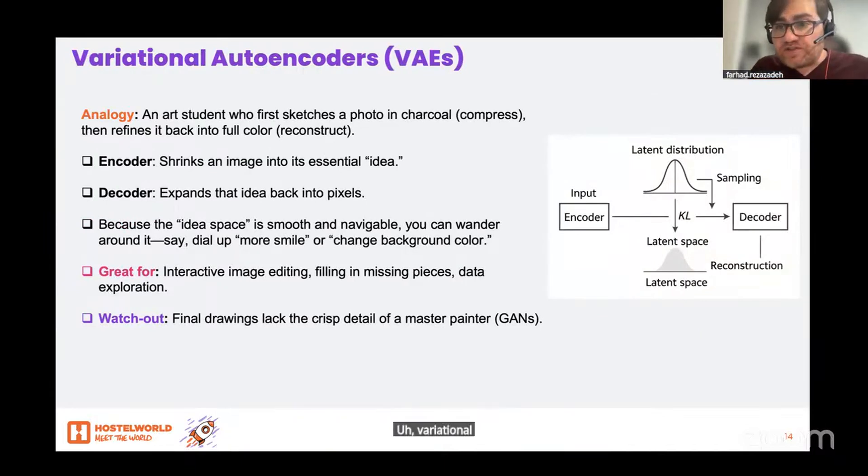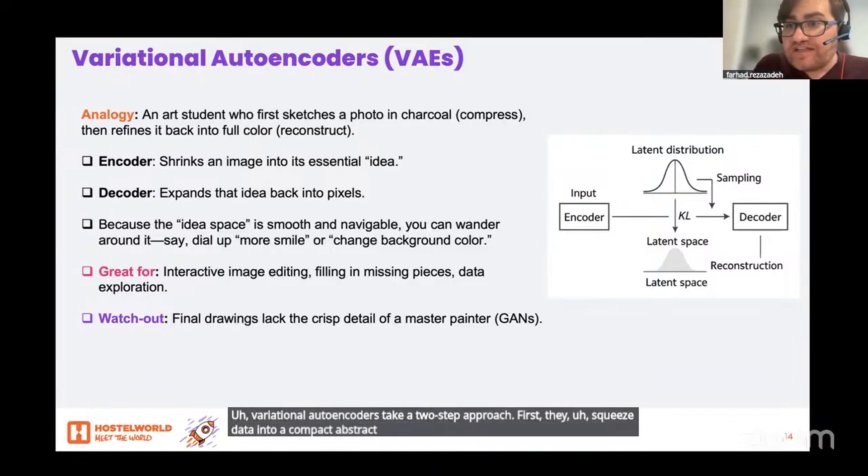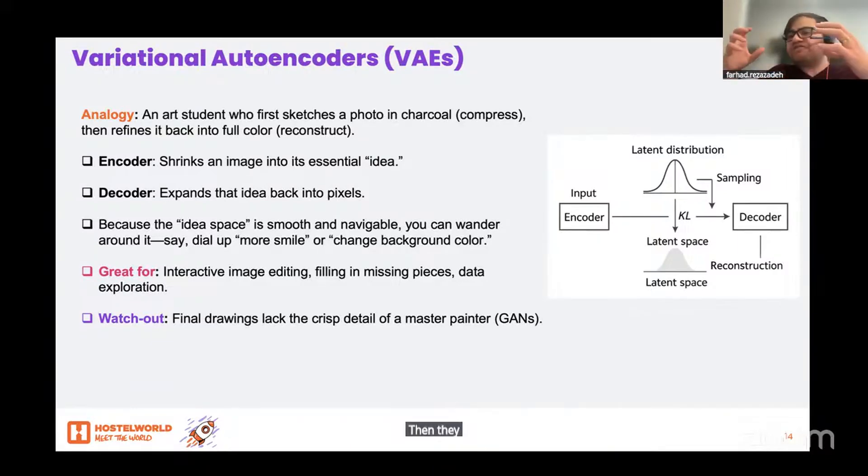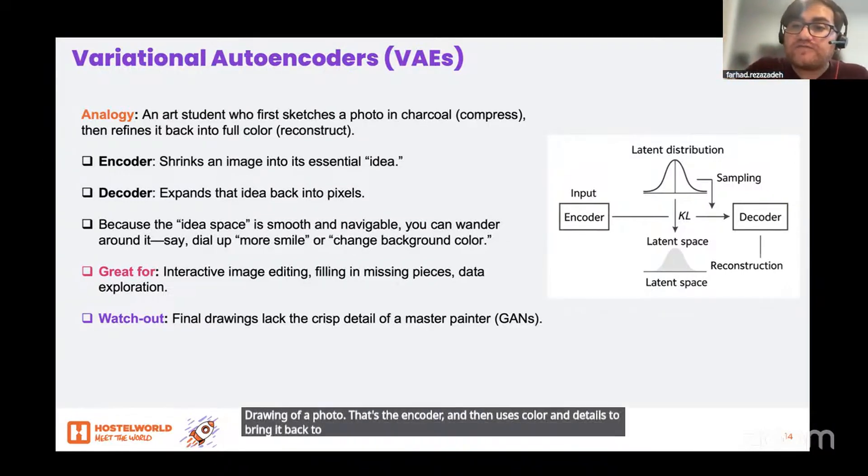Variational autoencoders take a two-step approach. First, they squeeze data into a compact, abstract sketch. Then they inflate that sketch back into a full-fledged image or sample. Think of an artist who makes a charcoal drawing of a photo—that's the encoder—and then uses color and details to bring it back to life—the decoder.